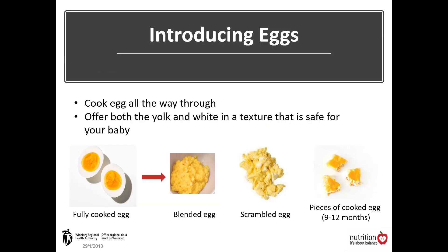When introducing eggs to your baby, make sure that the egg is cooked all the way through. Both the white and the yolk of the egg should be offered. The egg can be blended with breast milk, formula, or water, mashed or scrambled, or cut into strips for younger babies. Older babies can be offered small pieces of egg to pick up.